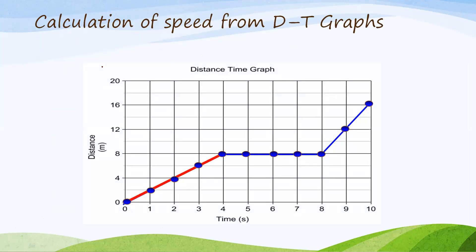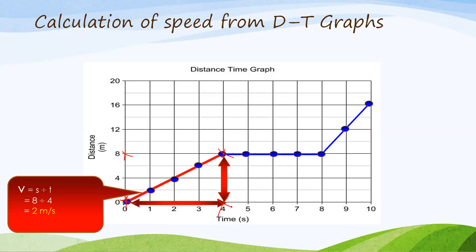Let us take the interval of time from 0 to 4 seconds. For finding the slope, we draw the y and x portions. Here the y value goes from 0 to 8 meters, so y equals 8 meters. Along the x-axis the points are 0 and 4, so x equals 4. Therefore speed v equals s divided by t equals 8 divided by 4 equals 2 meters per second. This is the speed of the car during the interval 0 to 4 seconds. Now let's find the speed at a different interval, say from 8 to 10 seconds.